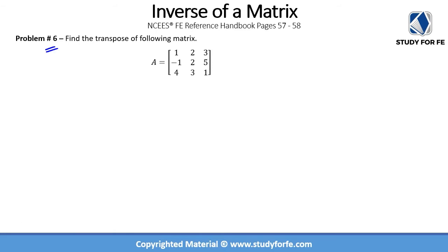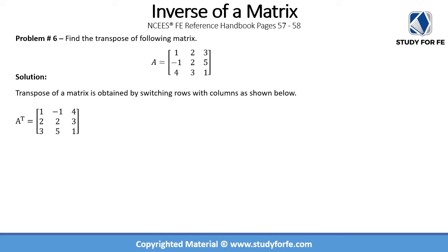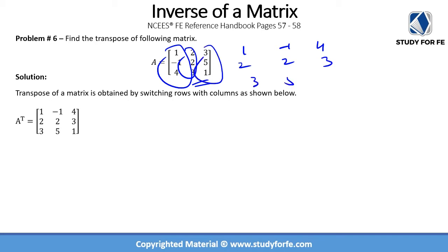Problem number six asks us to determine the transpose of the given matrix — the same matrix for which we calculated the determinant. We take each column and convert it into a row: column one becomes row one, column two becomes row two, column three becomes row three. The reason we need this transpose is because we need it to calculate the adjoint.